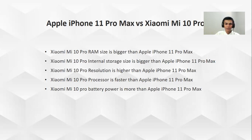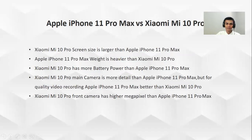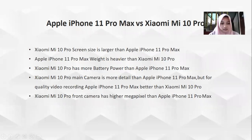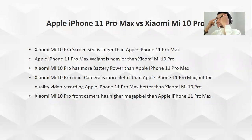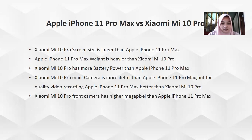Five: Xiaomi Mi 10 Pro battery power is more than Apple iPhone 11 Pro Max. Six: Xiaomi Mi 10 Pro screen size is larger than Apple iPhone 11 Pro Max. Seven: Apple iPhone 11 Pro Max weight is higher than Xiaomi Mi 10 Pro. Eight: Xiaomi Mi 10 Pro has more battery power than Apple iPhone 11 Pro Max. Nine: Xiaomi Mi 10 Pro camera count is more than Apple iPhone 11 Pro Max, but for quality video recording, Apple iPhone 11 Pro Max is higher than Xiaomi Mi 10 Pro. Ten: Xiaomi Mi 10 Pro front camera has higher megapixel than Apple iPhone 11 Pro Max.